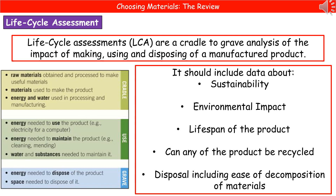The next thing to consider when choosing materials is what's called the life cycle assessment. Life cycle assessments are a cradle-to-grave analysis of the impact of making, using, and disposing of a manufactured product — something every manufacturer has to carry out. The 'cradle' stage covers raw materials: how we obtain and process them, the materials used to make the product, and the energy and water used in those processes.